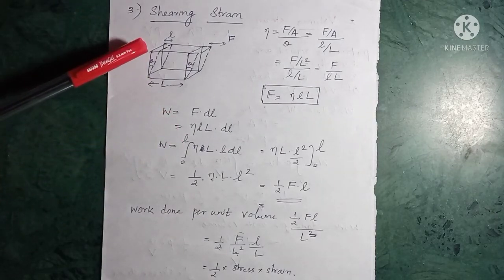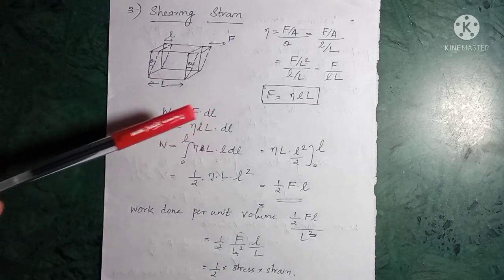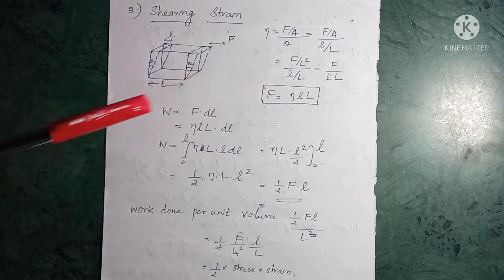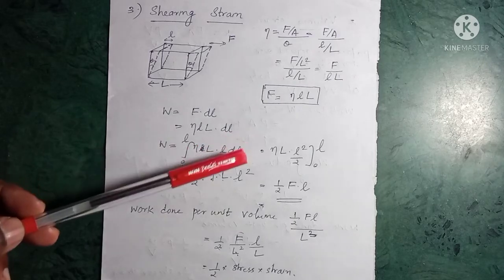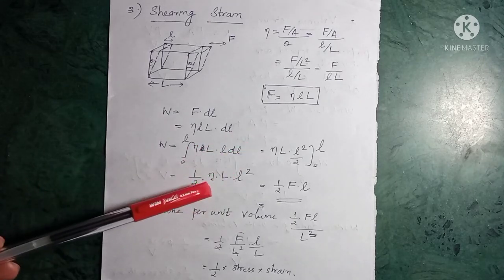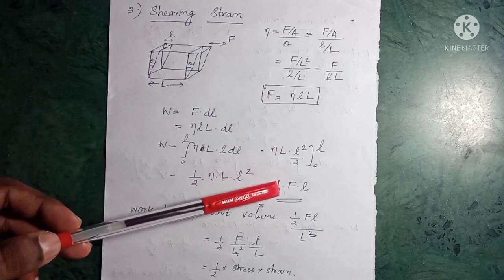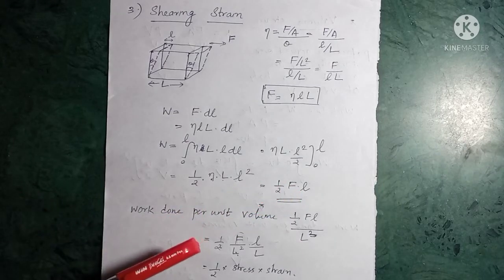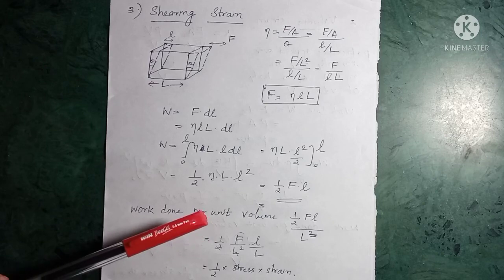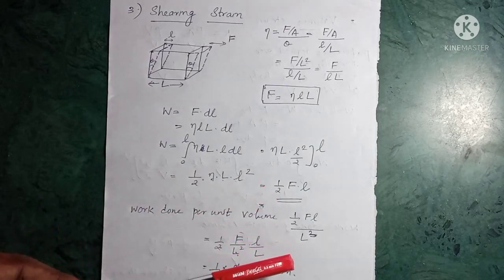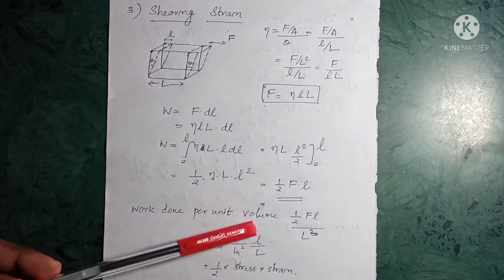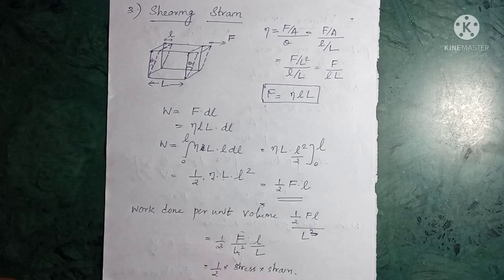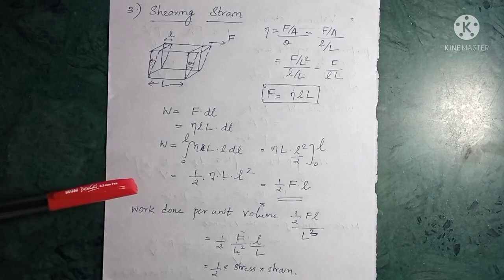The work done for an infinitesimal displacement of the upper surface is force times displacement. Substituting the expression for force and integrating from 0 to small l, we get ½ × η × L × l². Since η × L × l equals the force F, this becomes ½ × F × l. Dividing by the volume of the cube (L³), we get F/L² as stress and l/L as strain. Therefore, work done per unit volume = ½ × stress × strain. For all three cases — longitudinal, volume, and shearing strain — the work done per unit volume stored in the body is ½ × stress × strain.